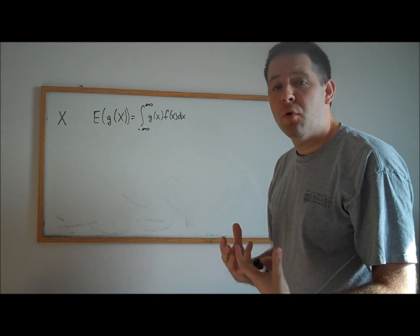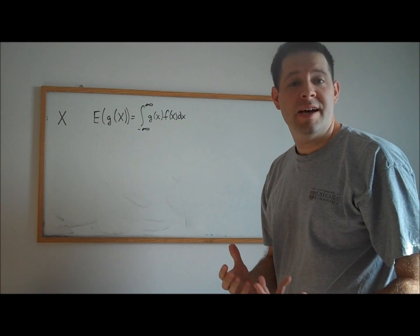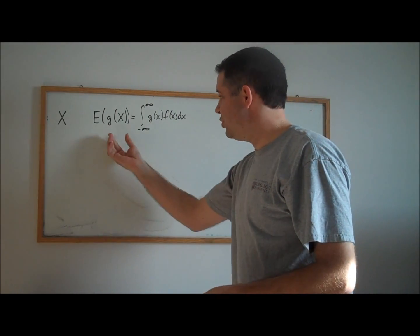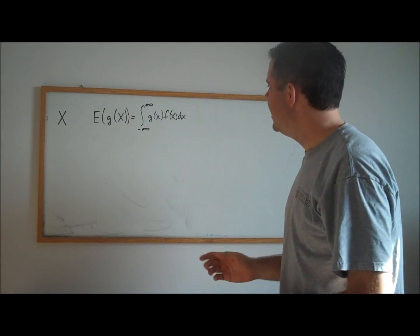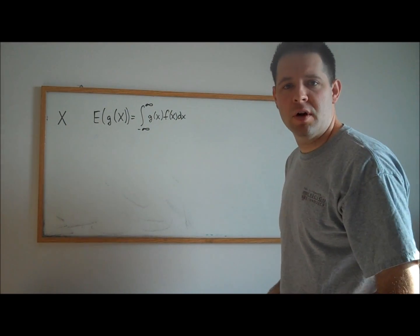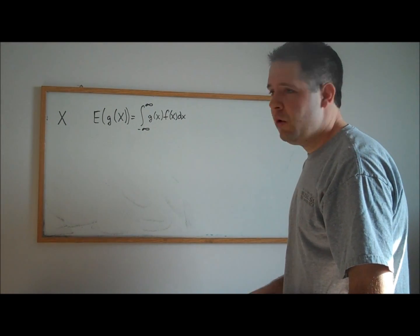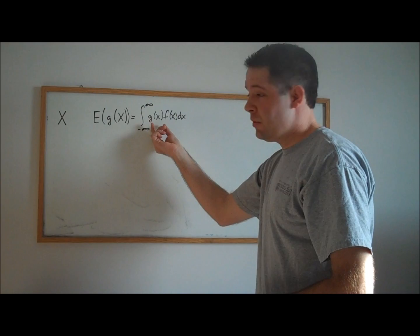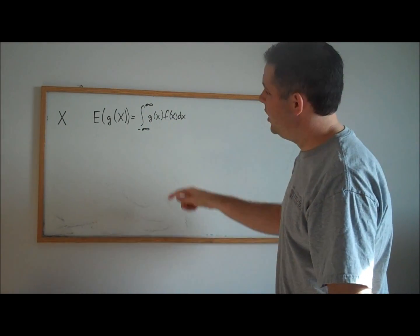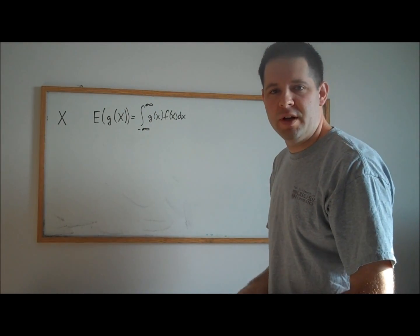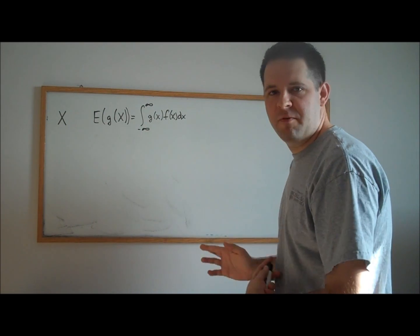In a previous video, one of the formulas that we talked about was the expectation of a function of a random variable. This is the formula for a continuous random variable. We plugged that function of the random variable in, multiplied it by the PDF, and integrated it over all possible realizations for the random variable.